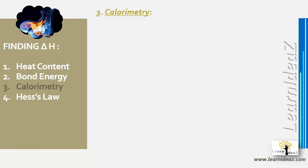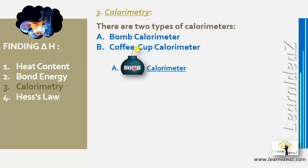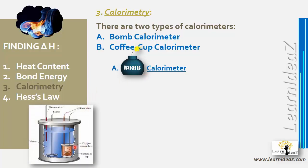We have two types of calorimeters: the bomb calorimeter and the coffee cup calorimeter. In the bomb calorimeter, the substance to be burned is placed in a small container where an electrical spark is given by ignition wires. The substance releases heat, which is transferred into the surrounding water. A stirrer circulates the water to maintain uniform temperature throughout.